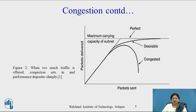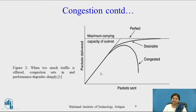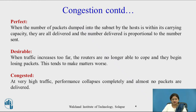Now look at this graph, which shows three different conditions. When too much traffic is offered, congestion sets in and performance degrades sharply. On the x-axis, packets sent from the source are given, and on the y-axis, packets delivered to the destination. The dotted line shows the maximum carrying capacity of the subnet. When packet delivery is directly proportional to packets sent, that is the perfect situation — no packet loss. The next situation is the desirable situation: when traffic increases too far, routers are no longer able to cope and begin losing packets.